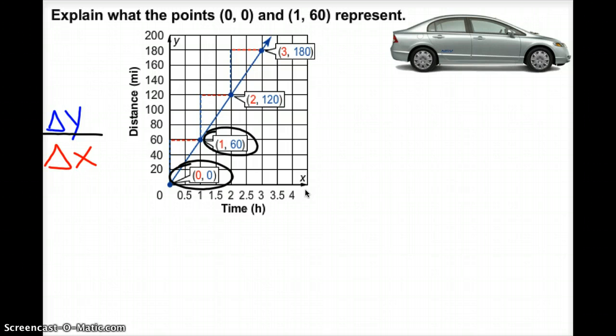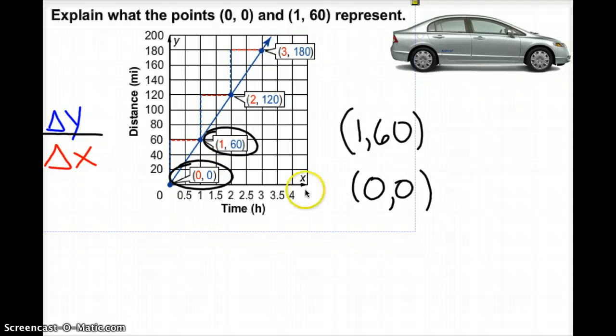You don't want to work with decimals or fractions. If I'm looking at (1,60) as a coordinate pair and (0,0), right away I know that when I'm at (0,0), it means I have not gone anywhere in zero time, meaning that's my starting point.